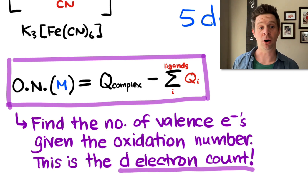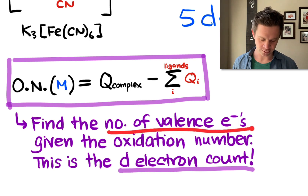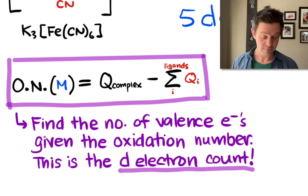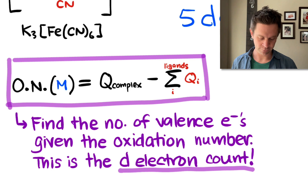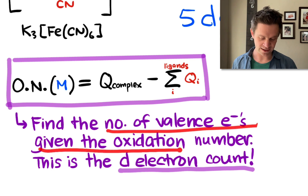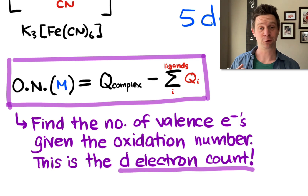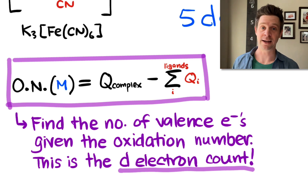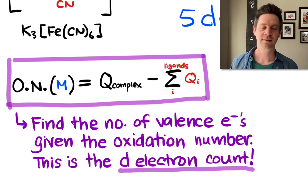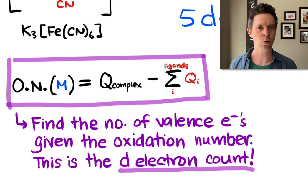Once you have the oxidation number, to determine the d electron count, take the number of valence electrons in the neutral atom and subtract the charge. This gives the number of valence electrons remaining, which is the d electron count, since all remaining valence electrons in the cation find their way into the d subshell. This d electron count is a quantity we're going to make use of later in this unit.